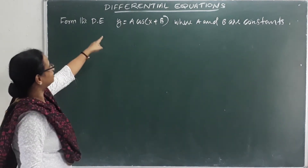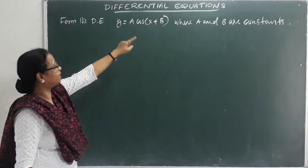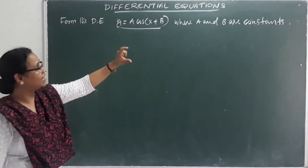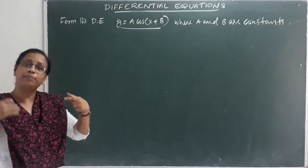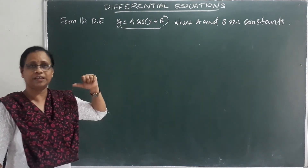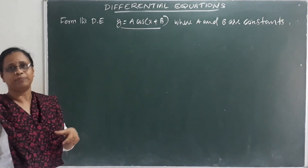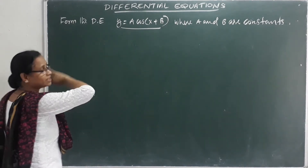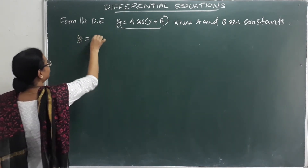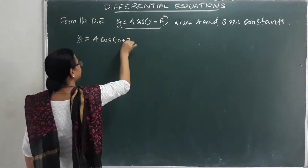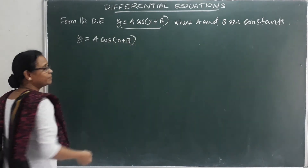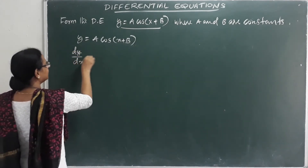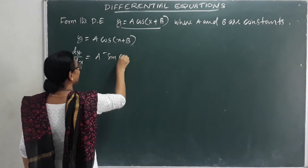Form the differential equation corresponding to y = a·cosx + b, where a and b are constants, by eliminating a and b. Differentiating: dy/dx = a·(−sinx).